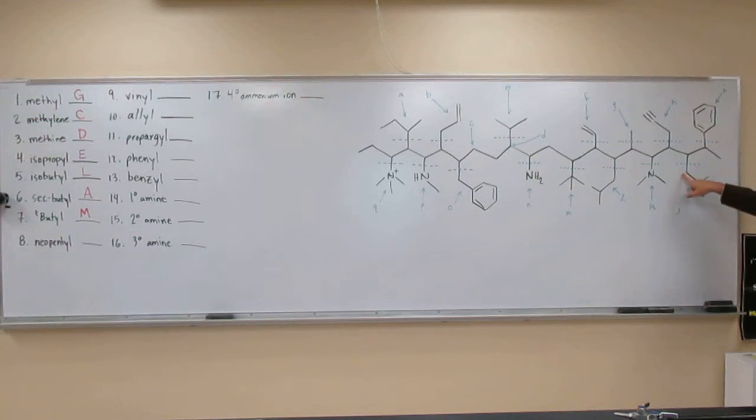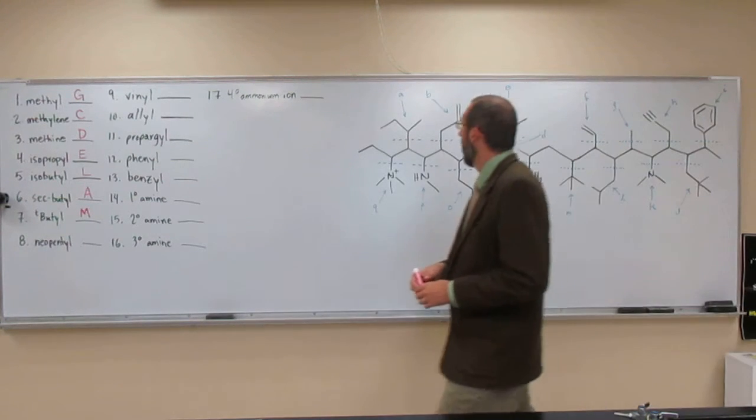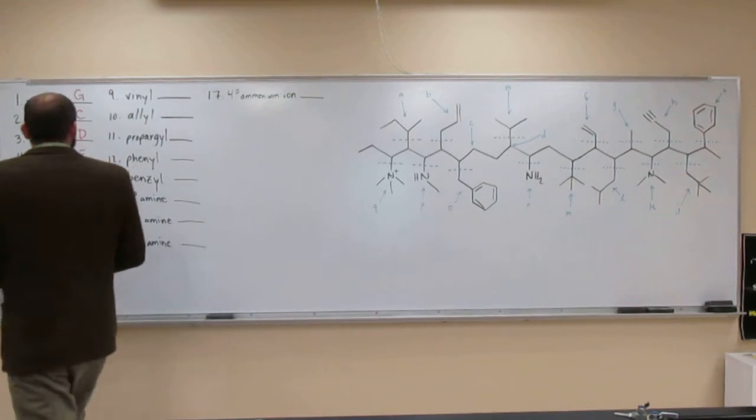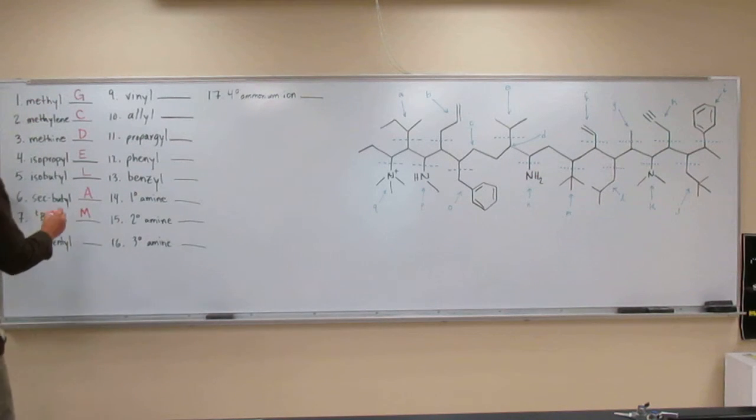one, two, three, four, five. There's your neopentyl group. So it looks kind of like a tert-butyl group with one more carbon in it. So that's J.